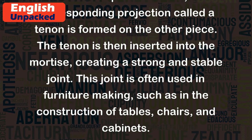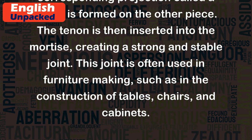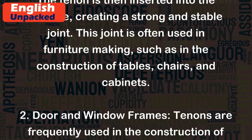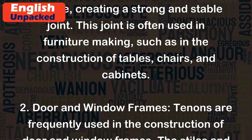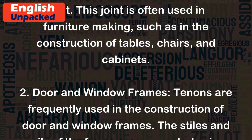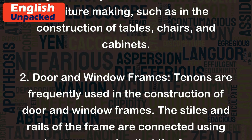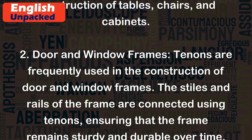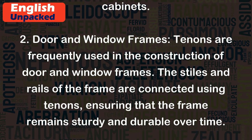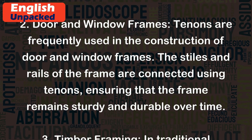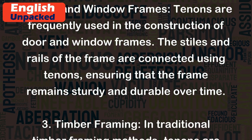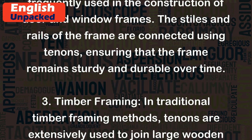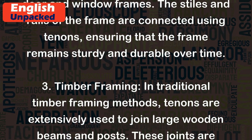This joint is often used in furniture making, such as in the construction of tables, chairs, and cabinets. 2. Door and window frames: Tenons are frequently used in the construction of door and window frames. The stiles and rails of the frame are connected using tenons, ensuring that the frame remains sturdy and durable over time.